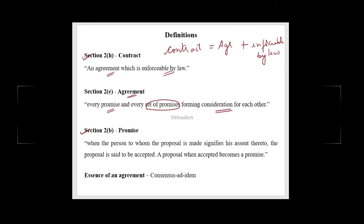As per Section 2, subsection B, which defines promise: when the person to whom the proposal is made — and a proposal is nothing but an offer — signifies his assent, which is nothing but acceptance, for that offer, the proposal is said to be accepted. So when a proposal is accepted, it becomes a promise.